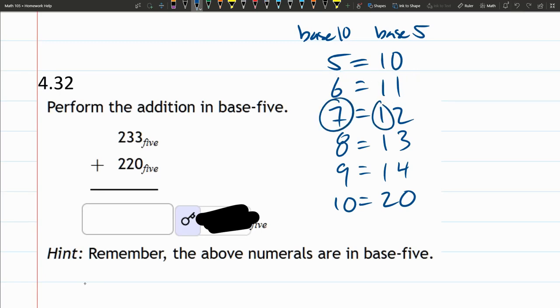7 is a 5 plus a 2 left over to get 7, and 8 is 1 five and a 3 left over. A 9 is 1 five and 4 left over.